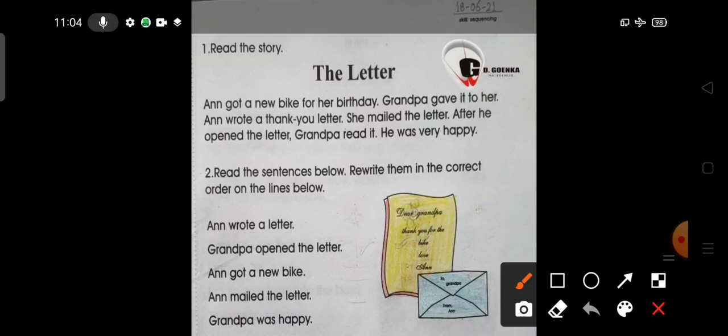First, Anne got a new bike. Second sentence, Anne wrote a letter. Third is Anne mailed the letter. Fourth sentence, Grandpa opened the letter. Fifth sentence, Grandpa was happy.